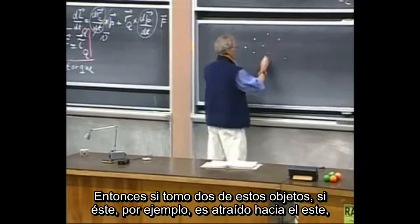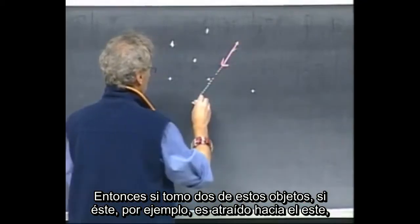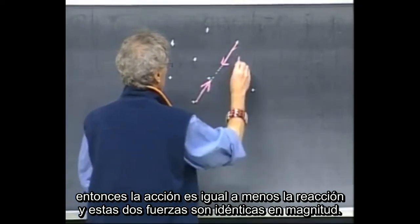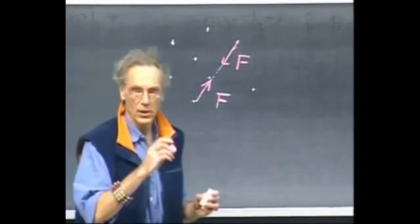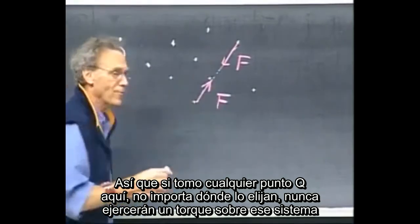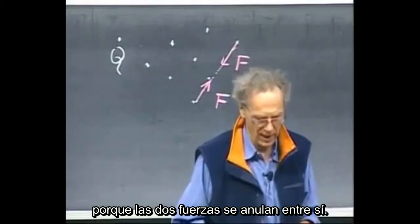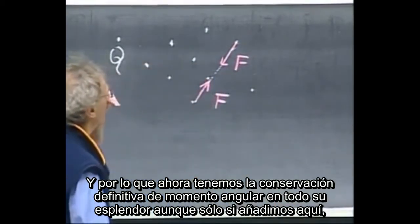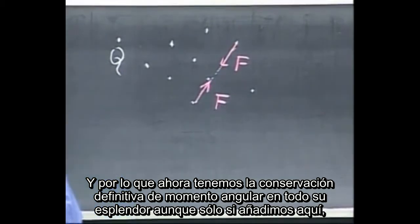If I take two of these objects, and this one is attracted towards that one, then action equals minus reaction, so these two forces are identical in magnitude. If I take any point Q, no matter where you choose it, that will never put a torque on the system because the two forces cancel each other out. And so now we get the final conservation of angular momentum.